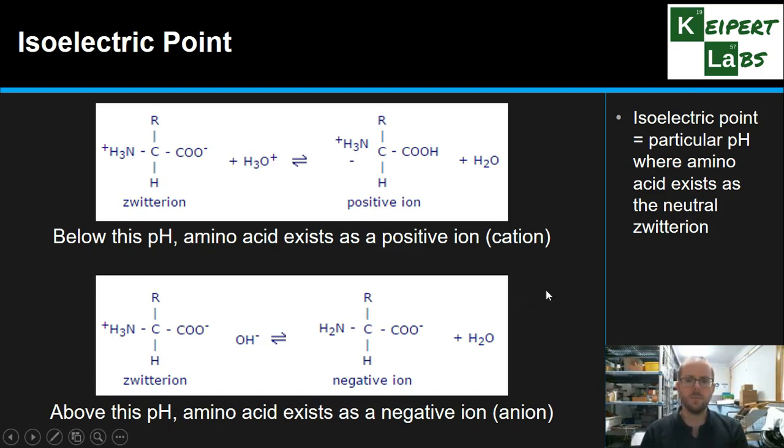And so what we see is this idea that the pH of the solution an amino acid is in has a huge effect on exactly which version of it we're going to find. Is it the neutrally charged zwitterion in the middle, the one that's got the balance of the charges? Is it going to be the positive cation version? Is it the negative anion version? And by manipulating the pH, we can control which version we will find.